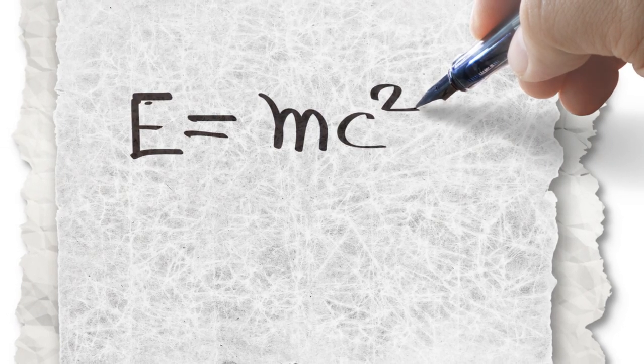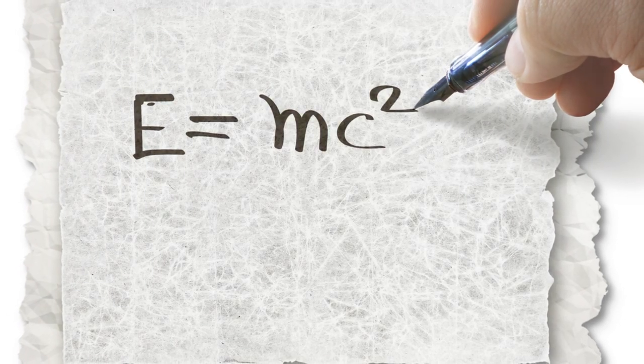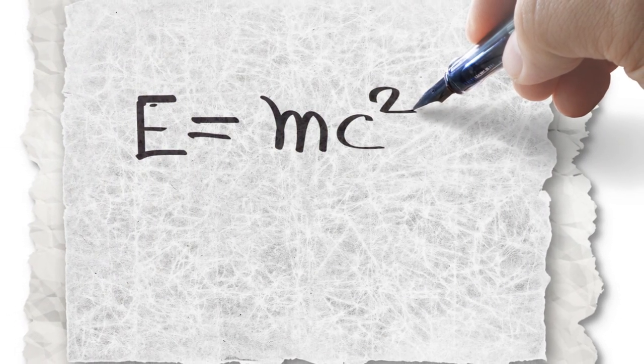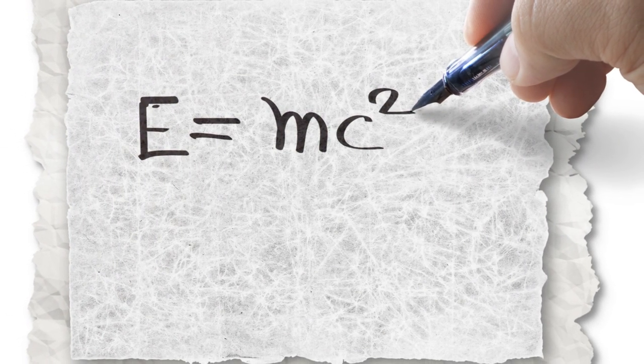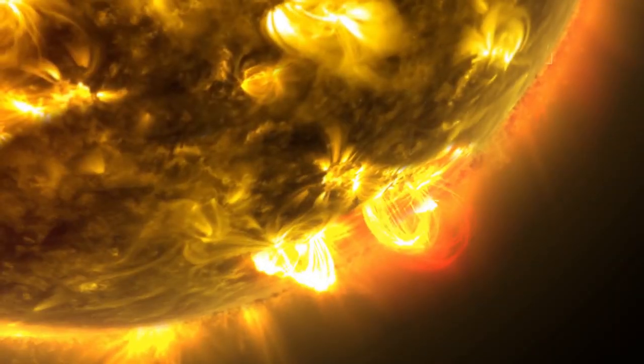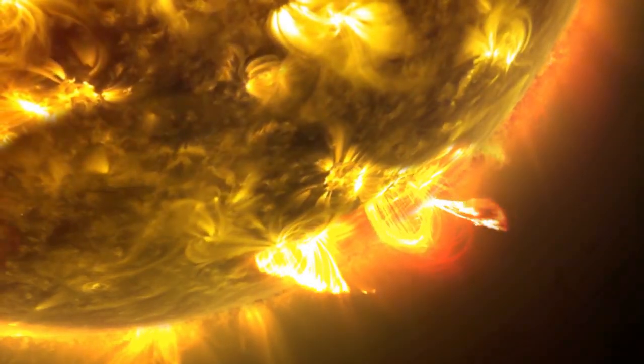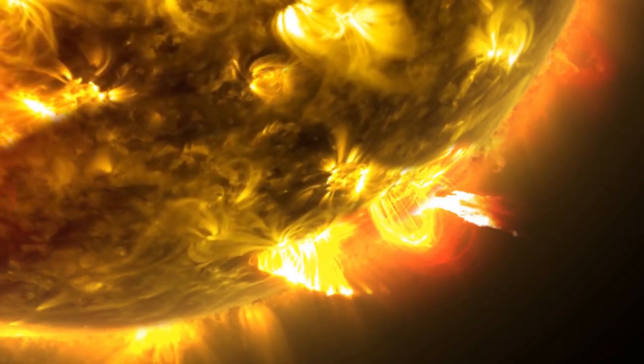Einstein's equation tells us that energy and mass are interchangeable. They're two sides of the same coin. So our rock and lightning bolt friends are not so different after all. And the speed of light, that zippy comet, it's a big part of this equation too.